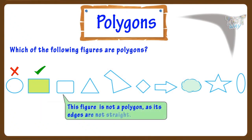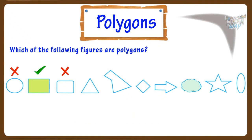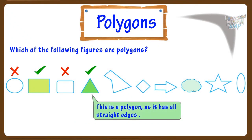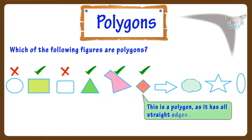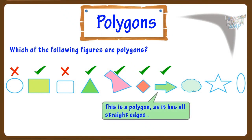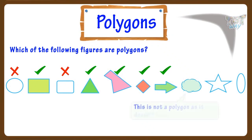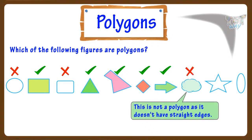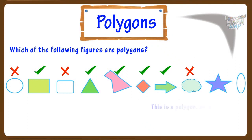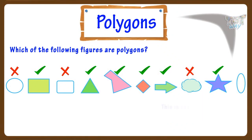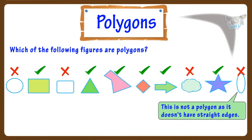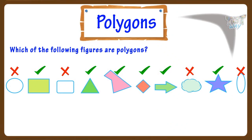This figure is not a polygon as its edges are not straight. This is a polygon as all its edges are straight. This too is a polygon. This is a polygon. This is also a polygon. This is not a polygon as it doesn't have straight edges. This is a polygon as it has all straight edges. This is not a polygon. So we have selected all the polygons out of these shapes.